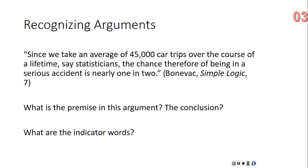Let's look at another example: 'Since we take an average of 45,000 car trips over the course of a lifetime, say statisticians, the chance therefore of being in a serious accident is nearly one in two.' What is the premise in this argument, what is the conclusion, and what are the indicator words?